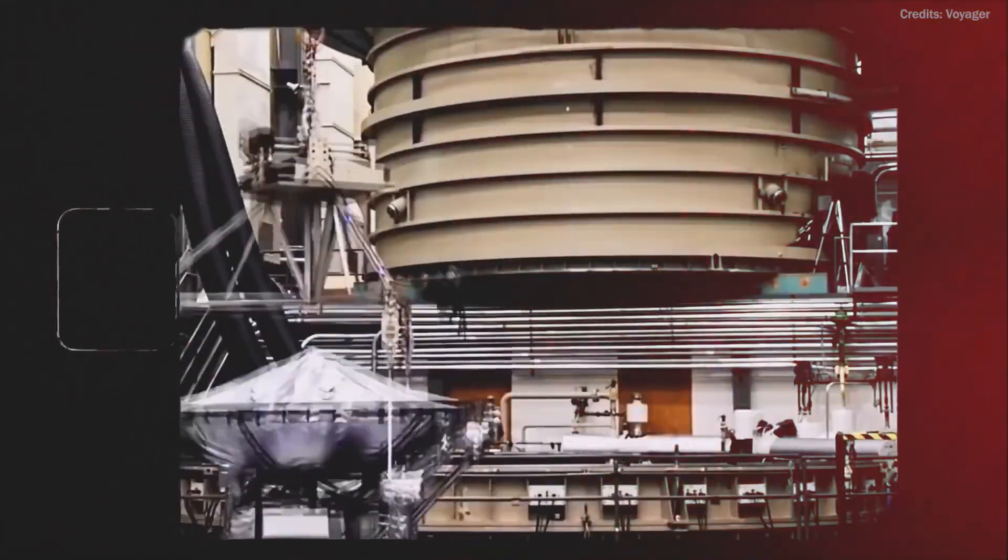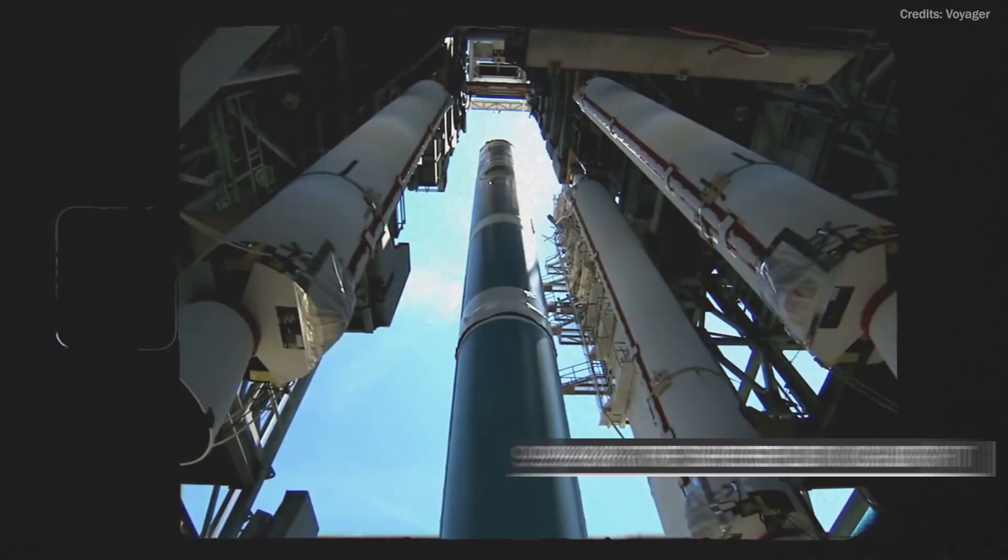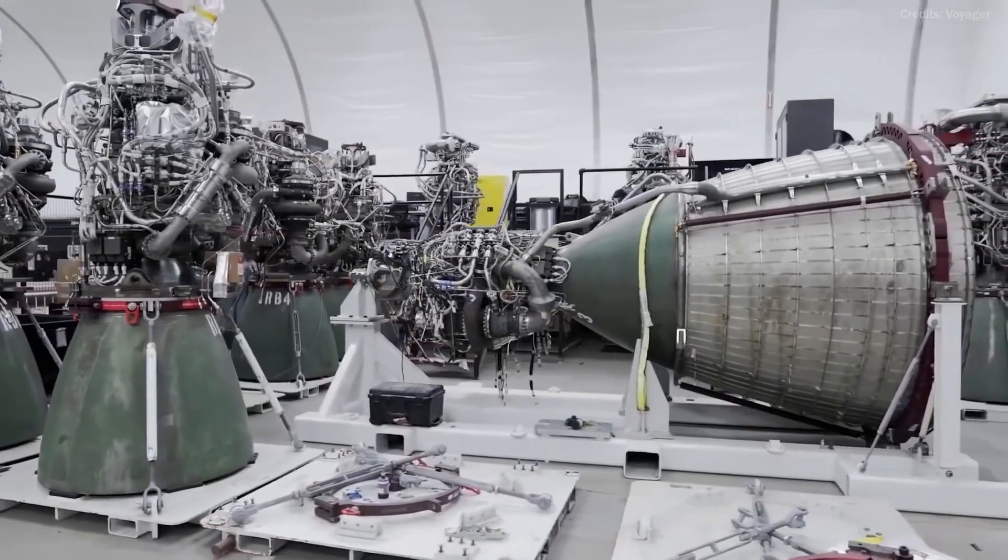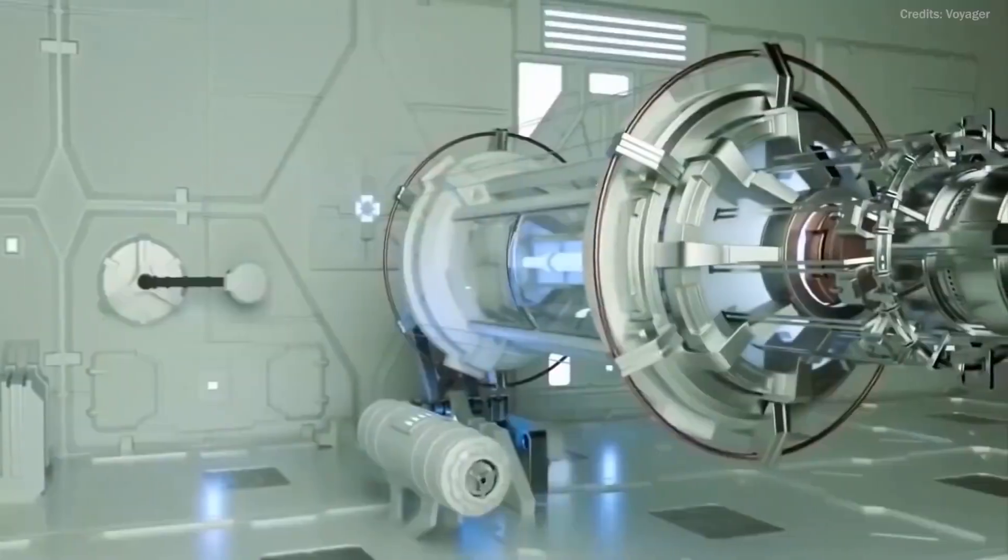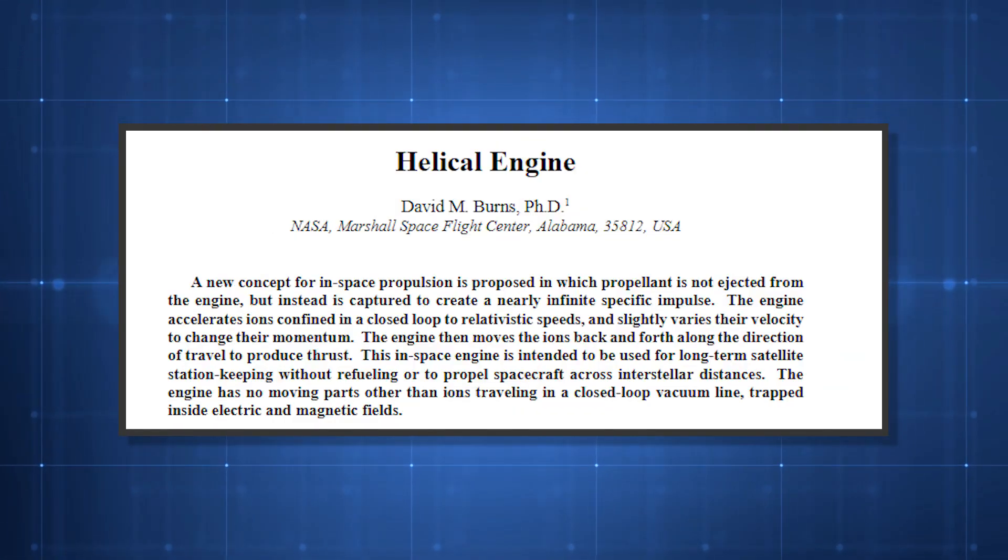NASA engineer David Burns created an engine based on the concept of the speed of light. Theoretically, this engine could achieve 99% of the speed of light. The special feature of Burns' theoretical engine concept is that this engine does not use any type of propellant. This concept was revealed in a mind-boggling paper published on NASA's website. As a thought experiment, they describe a box containing weights to explain their concept better. The weight bounces back and forth on a line, with a spring at each end.